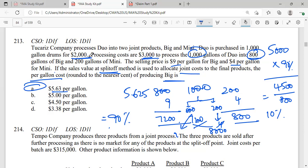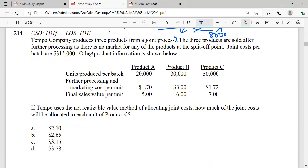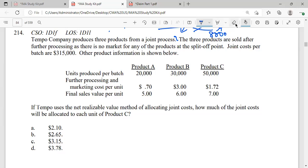Let's move forward towards another question related to it. Let us read the requirement first. If Tempo uses a net realizable value method of allocating joint cost, how much of the joint cost will be allocated to each unit of Product C? Now there are three products sold after further processing, as there is no market for any products at the split-off point.